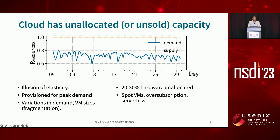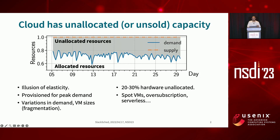Cloud deployments today are underutilized. To provide an illusion of elasticity, clouds are provisioned for peak demand. When there are variations in demand, this leads to around 20% to 30% of hardware sitting unallocated or unsold. There are techniques like spot VMs, oversubscription, or serverless functions that aim to monetize these resources, but they still leave a lot of resources unmonetized.